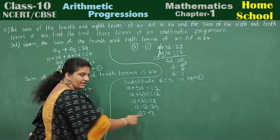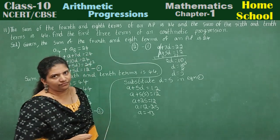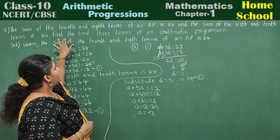First term is minus 13 and the common difference is 5. What we need to calculate here? Find first three terms of an arithmetic progression.